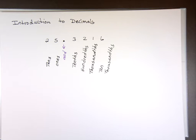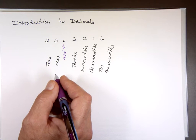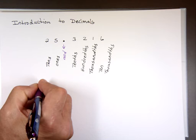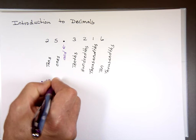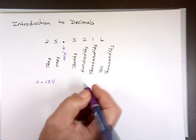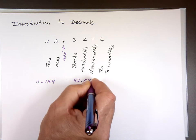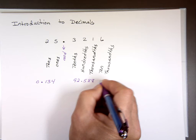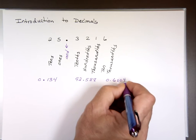So, the first section here, we might ask you, like, what digit? I'll put a few of them. Let's say I give this number, 0.134. Ninety-two point five-eight-eight. Zero point six-zero-zero-four-three-seven.